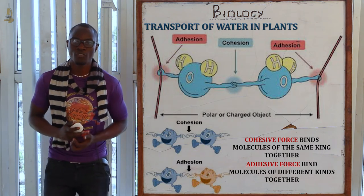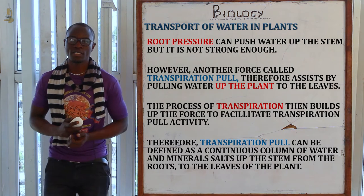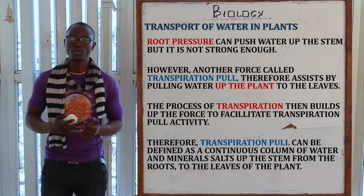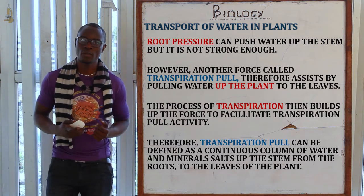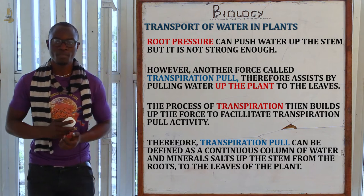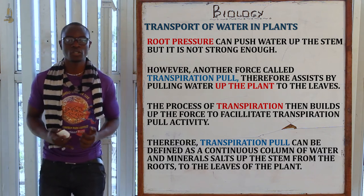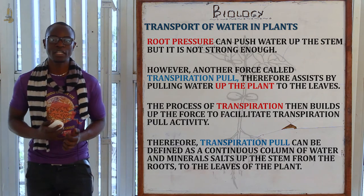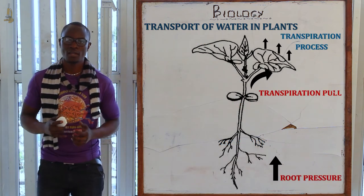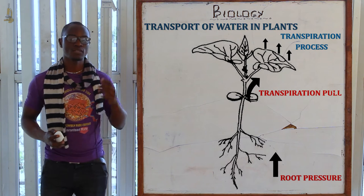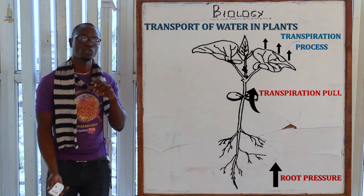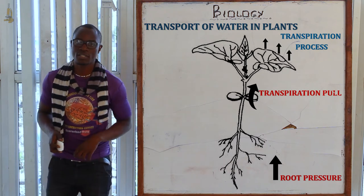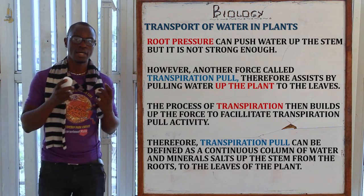The cohesive and adhesive forces help the water move continuously up the xylem without breaking. Since root pressure is not very strong — it depends on the force of the next water molecule to push the other up — transpiration pull helps assist it. The transpiration pull pulls water from the upper parts of the plant while root pressure pushes water from the lower parts upward toward the leaves.